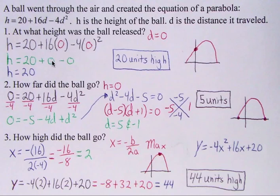And 16 times zero is zero. Zero squared is zero. Zero times negative four is zero. So basically, your answer is 20. So it's 20 units high. So basically, this ball got released 20 units high.